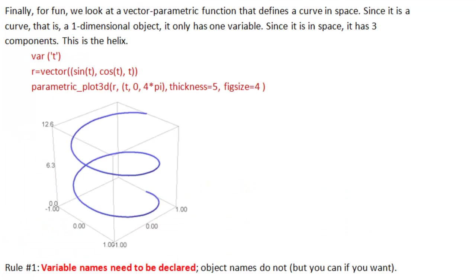Finally, for fun, we look at a vector parametric function that defines a curve in space. Since it is a curve, that is, it is a one-dimensional object, it only has length. It doesn't have area. It has only one variable. The dimension of the object tells you how many variables it has. Since it is in space, it has 3 components. This is the helix. I love the helix. So the first thing we do is declare our variable. Usually we use the variable name t for parametric functions. So var of t there.